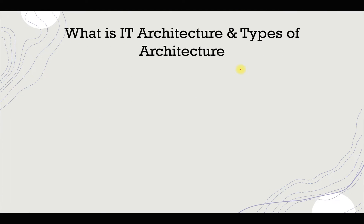We talk a lot about IT architecture, but many people are confused about how to interpret what exactly an IT architecture is. In this quick video, I'll talk about what exactly IT architecture is and the types of architecture we have in IT. In simple terms, IT architecture is a process of designing and consulting IT solutions which follows some principles and guidelines.